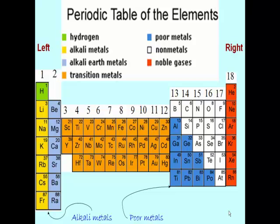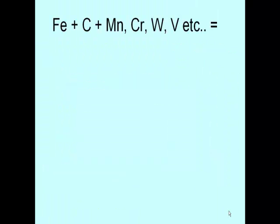Transition metals have a wide variety of uses. For instance, iron is the most abundant element on earth. It is also a very useful transition metal. Iron is combined with carbon and other transition metals to make steel.